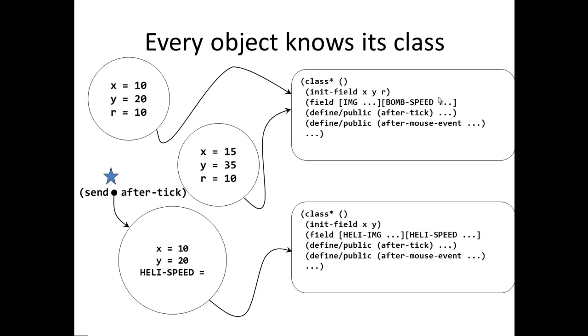If I send the helicopter an after-tick method, the object knows that it's a helicopter, so it calls the after-tick method in helicopter.